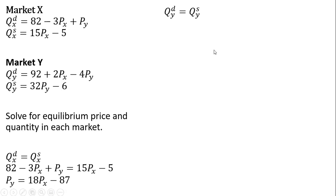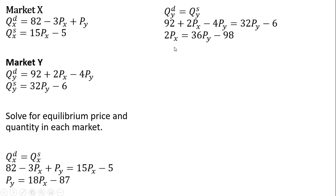We're going to do a similar thing in the market for good Y. Setting the quantity demanded for good Y equal to quantity supplied and setting these two equations equal to one another, I'm going to solve for the price of good X. Subtracting 92 from both sides — this is where this minus 98 is coming from, minus 92 minus 6. And then adding 4 times the price of good Y to both sides, that's where this 36 times the price of good Y is coming from.